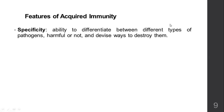Features of acquired immunity: first is specificity — it is specific in the way it will tackle or destroy a pathogen. It has the ability to differentiate between different types of pathogens, knowing if a pathogen is harmful or not, and it will devise its own way to tackle it. It has a different way of destroying bacteria and a different way of destroying viruses — it understands this is not a bacteria, this is a virus, this is good bacteria, this is bad bacteria. In warfare terms, it has different categories of weapons for different kinds of attacks.